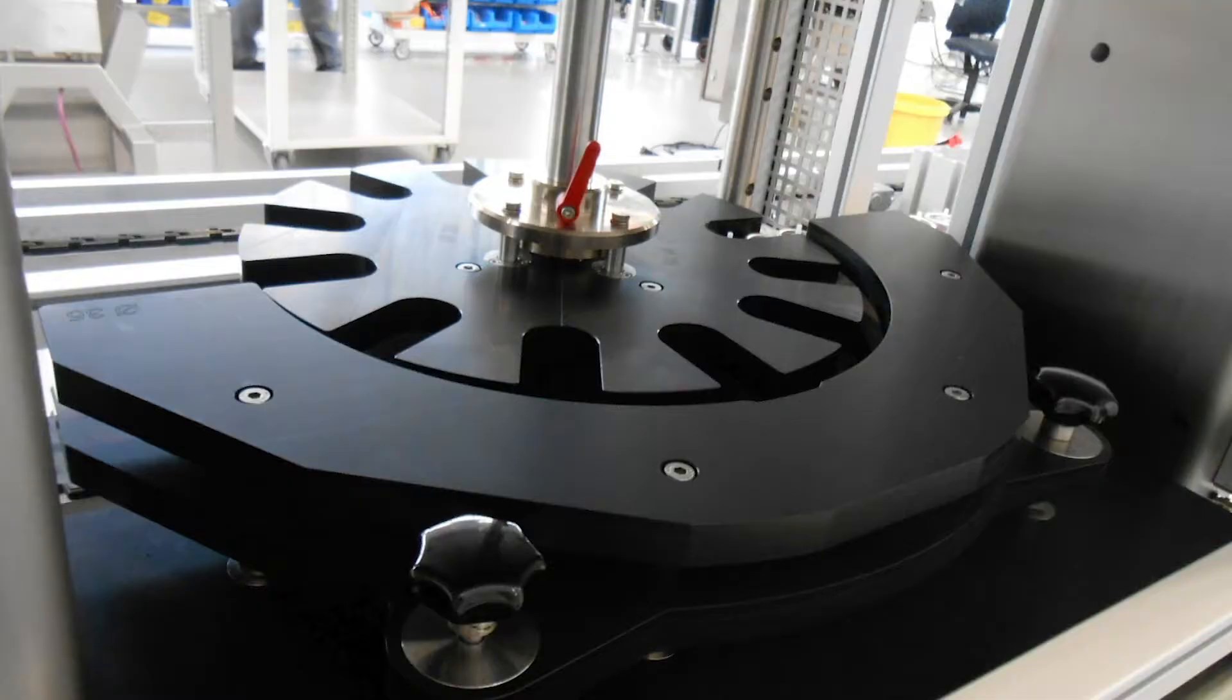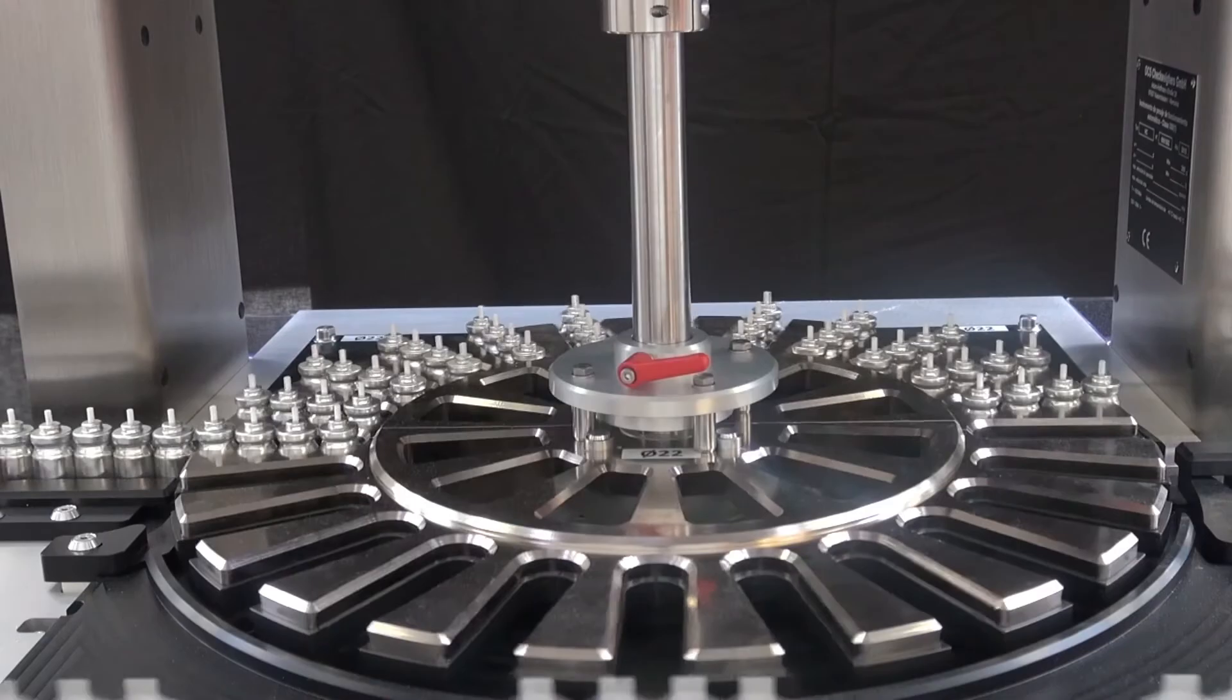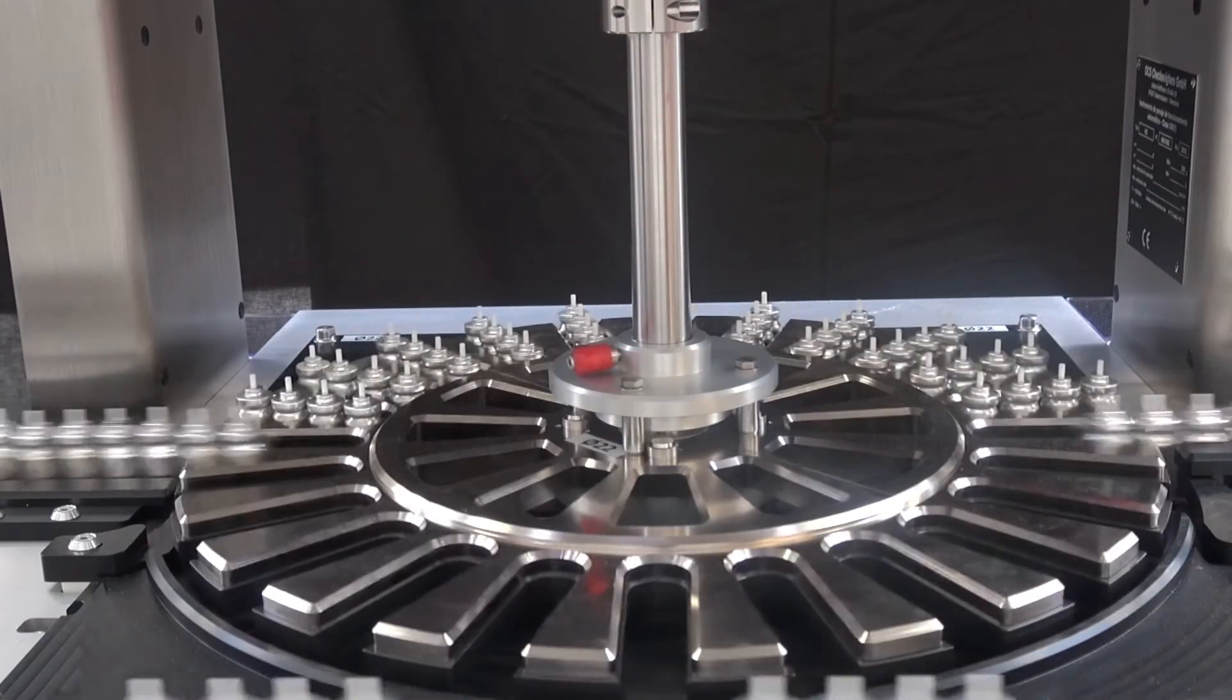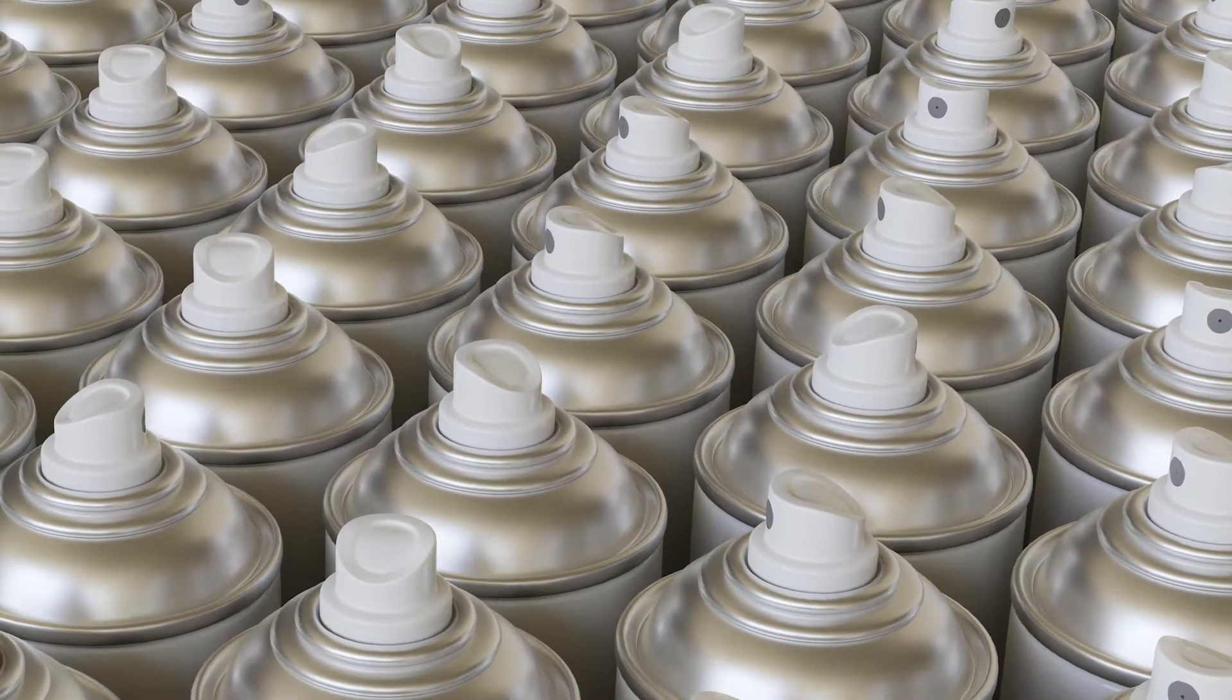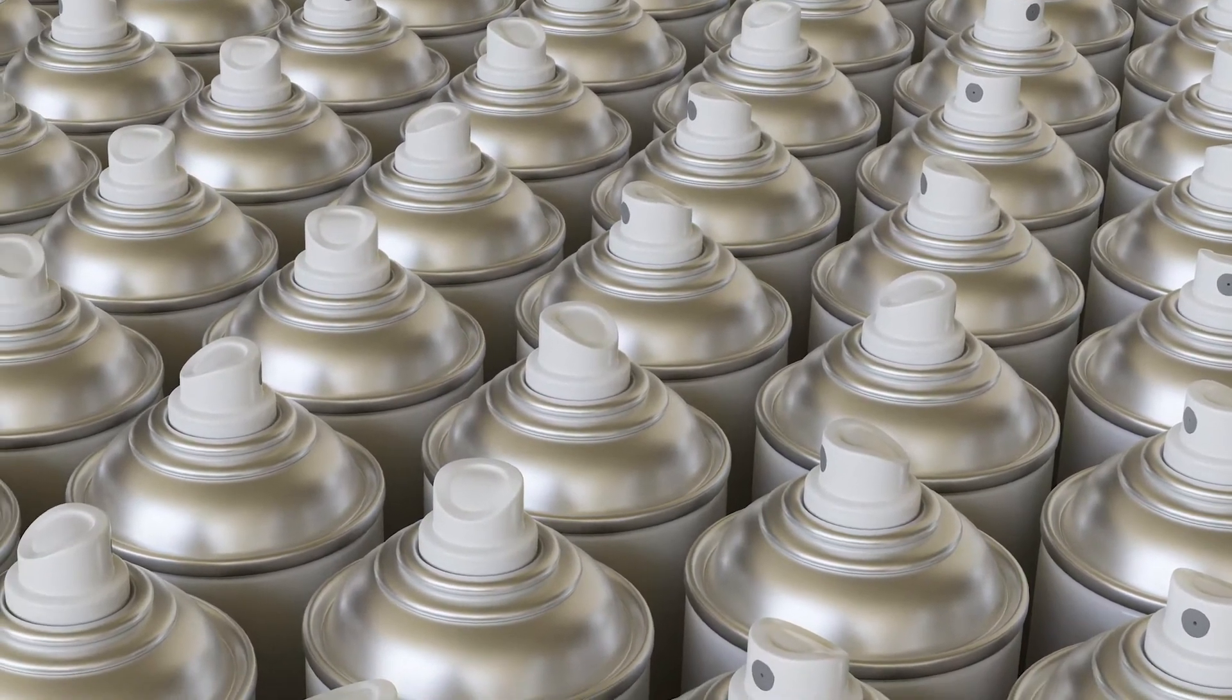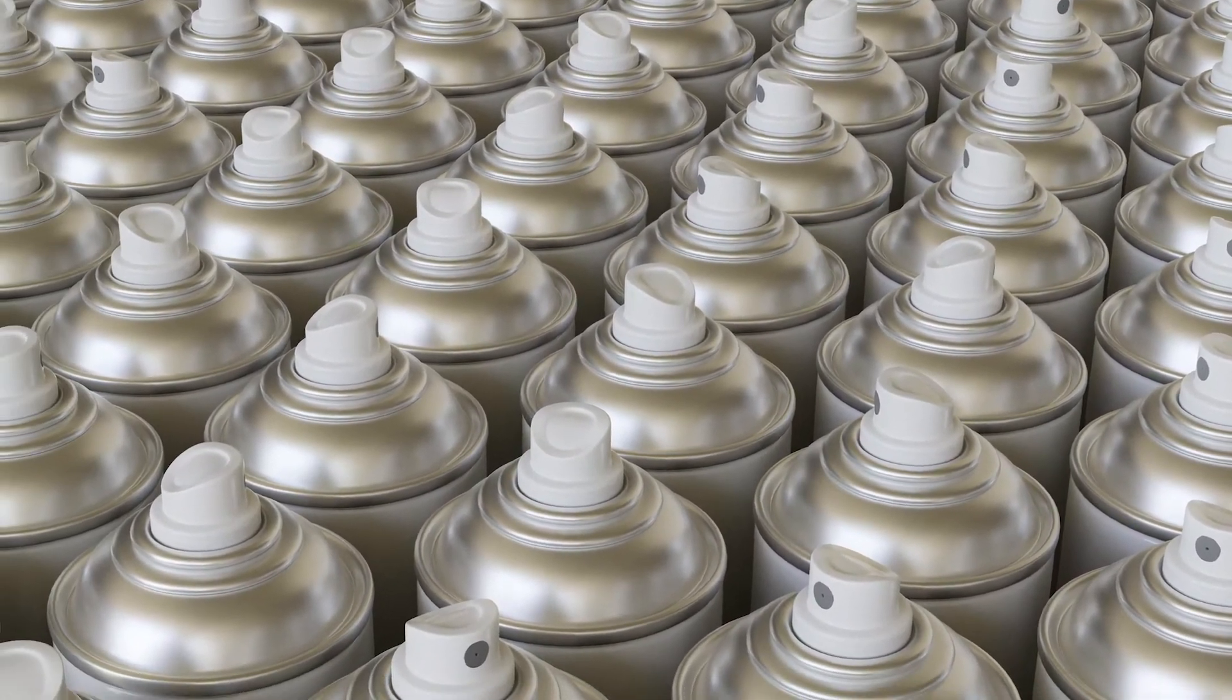Multiple weigh cells are used for the two, three, and four positions HCAIS checkweigher configurations. Food, household, cleaners, healthcare, pharmaceutical, and cosmetic packaging lines are prime examples of HCAIS checkweigher applications.